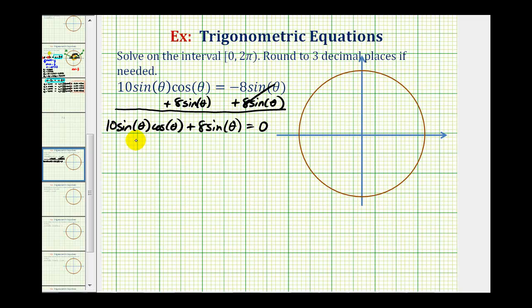Now the greatest common factor between these two terms would be two sine theta. So we'll factor out two sine theta. This will leave us with five cosine theta plus four.